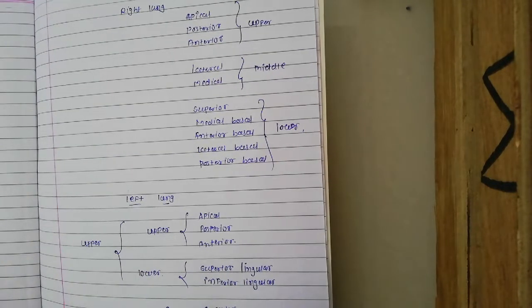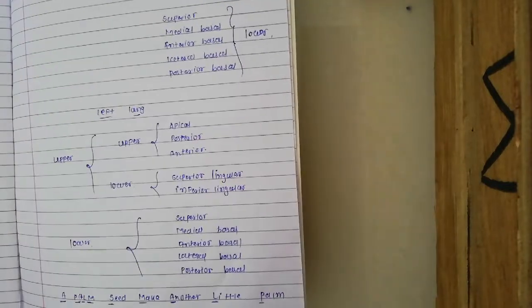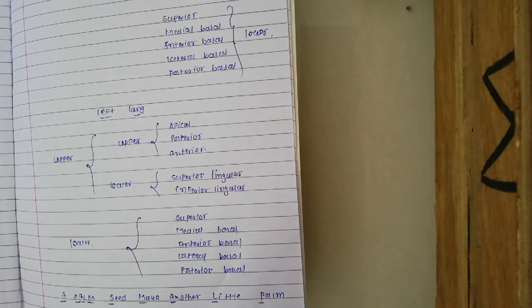The left lung has upper and lower lobes. The upper lobe has two divisions: upper and lower. From the upper division: apical, posterior, and anterior.